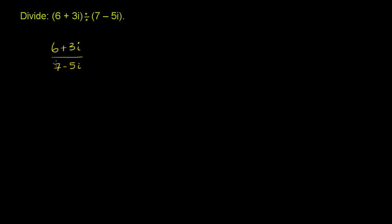And so how do we simplify this? Well, we have a tool in our toolkit that can make sure that we don't have an imaginary or complex number in the denominator. And that's the complex conjugate. If we multiply both the numerator and the denominator of this expression by the complex conjugate of the denominator, then we will have a real number in the denominator.